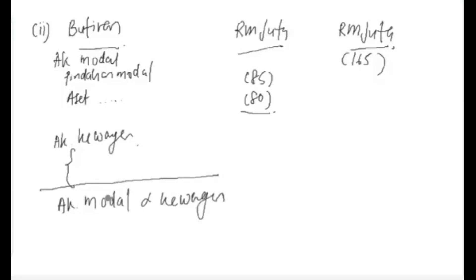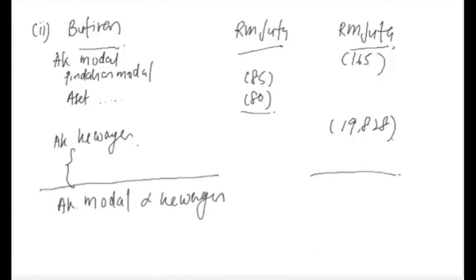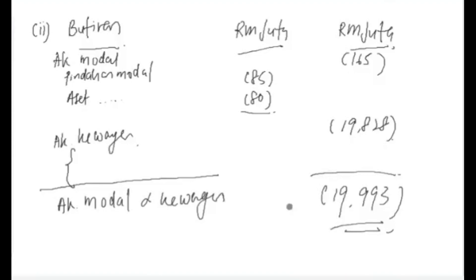Akaun kewangan pun sama — catatkan empat komponen itu. Akaun kewangan yang kita dapat tadi nilainya sama dengan negatif 19,828. Jadi amount bagi akaun modal dan kewangan mencatat negatif 19,993 RM juta.